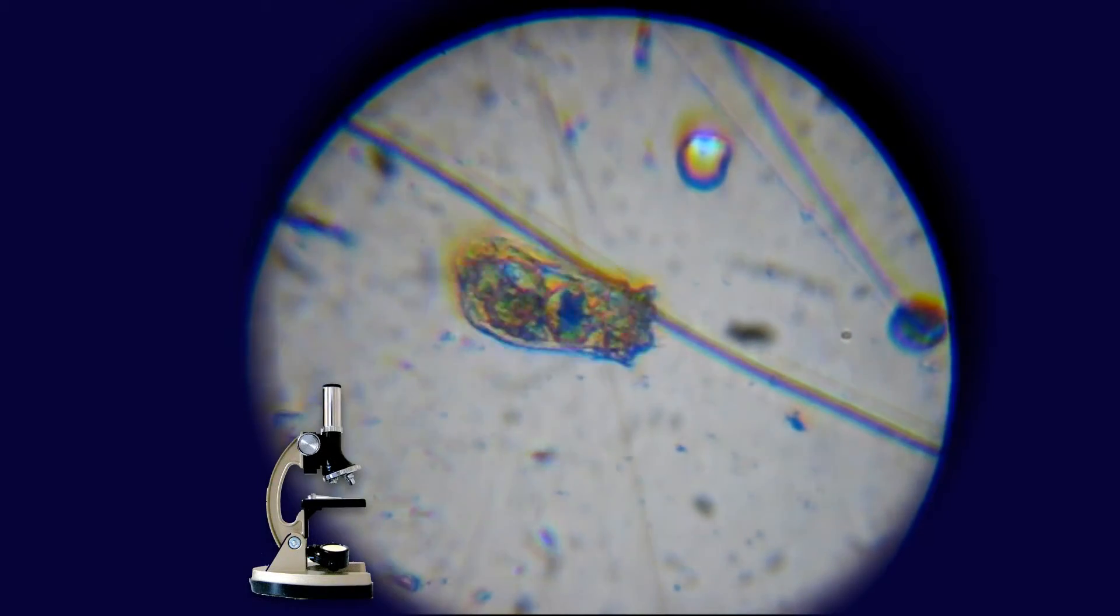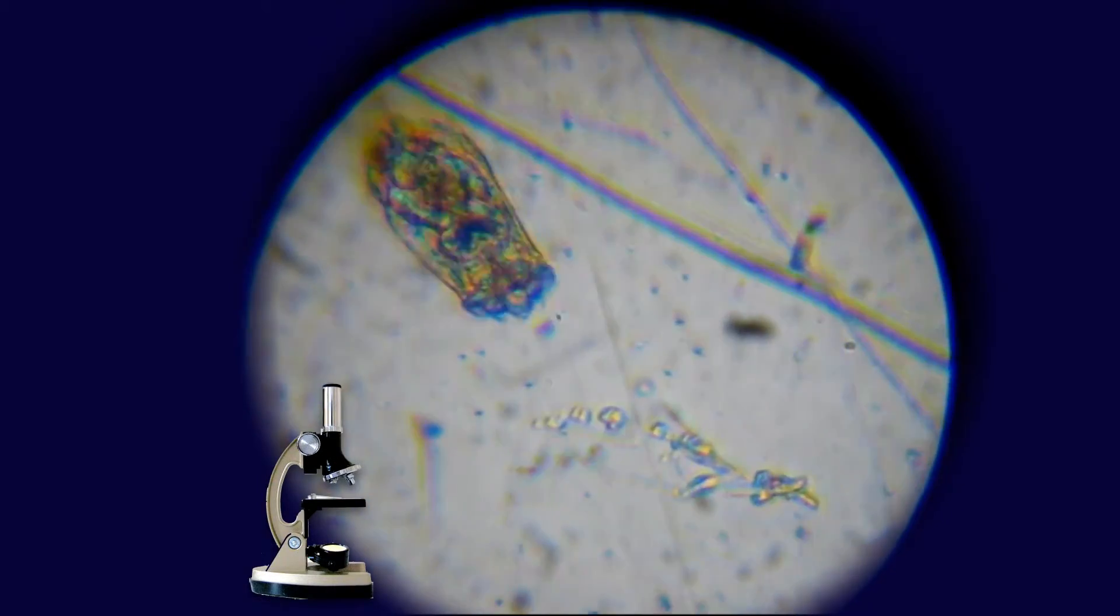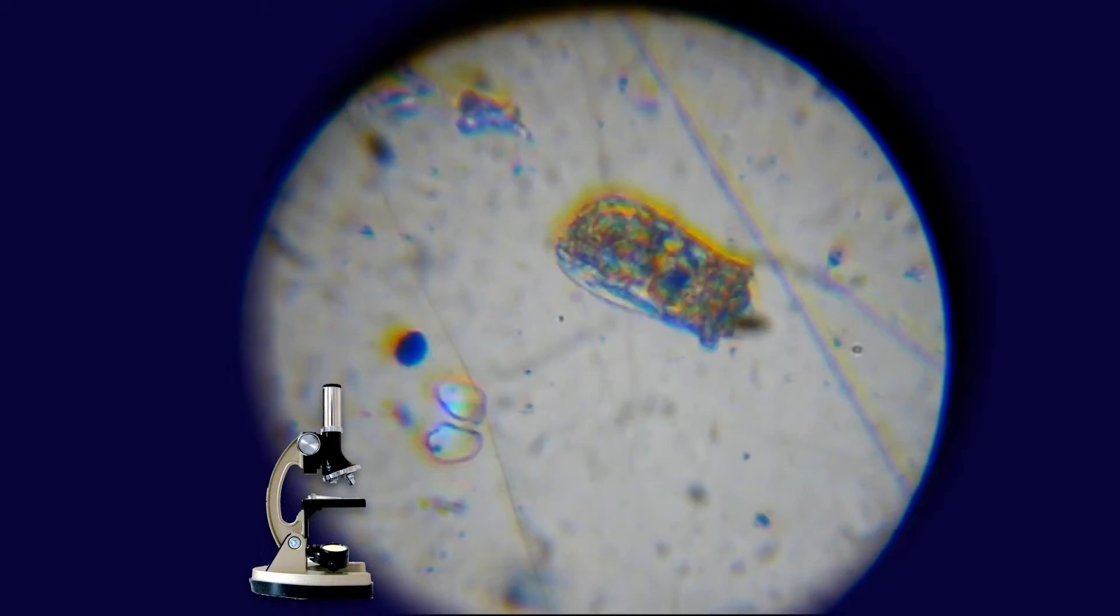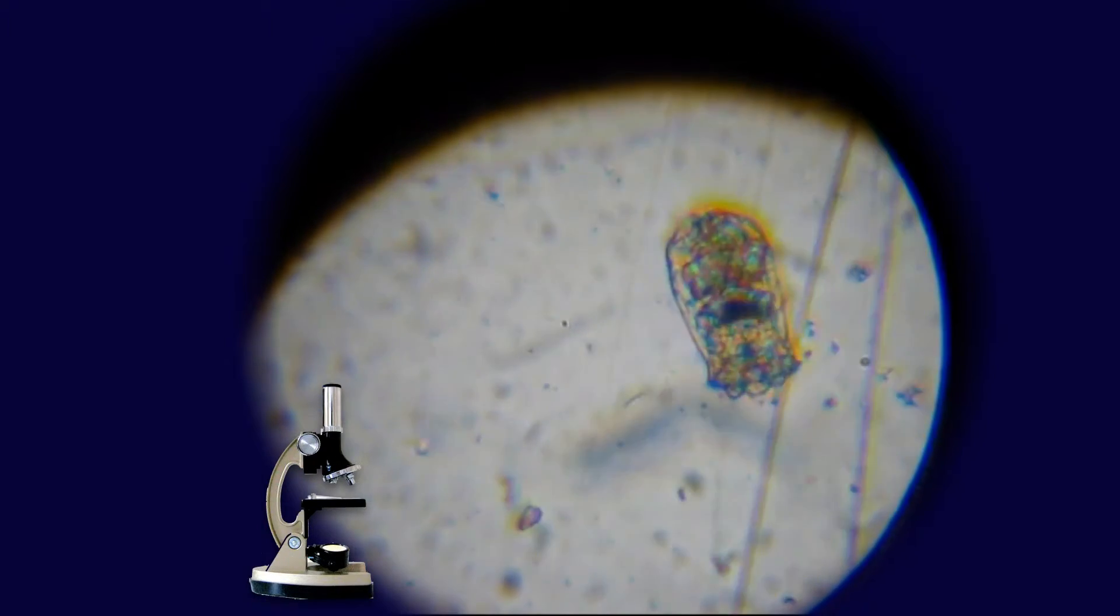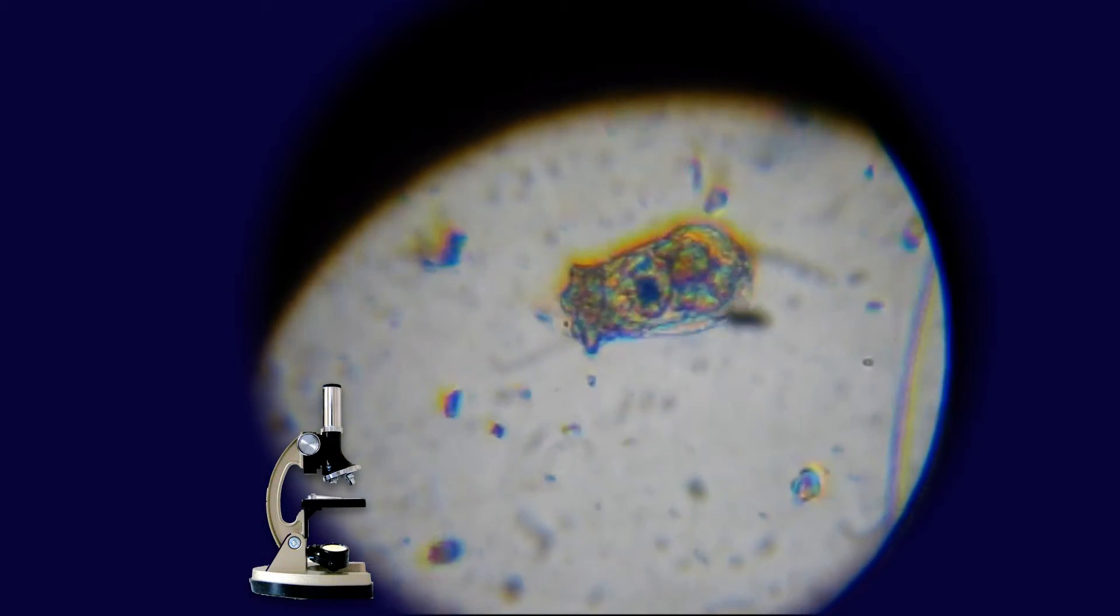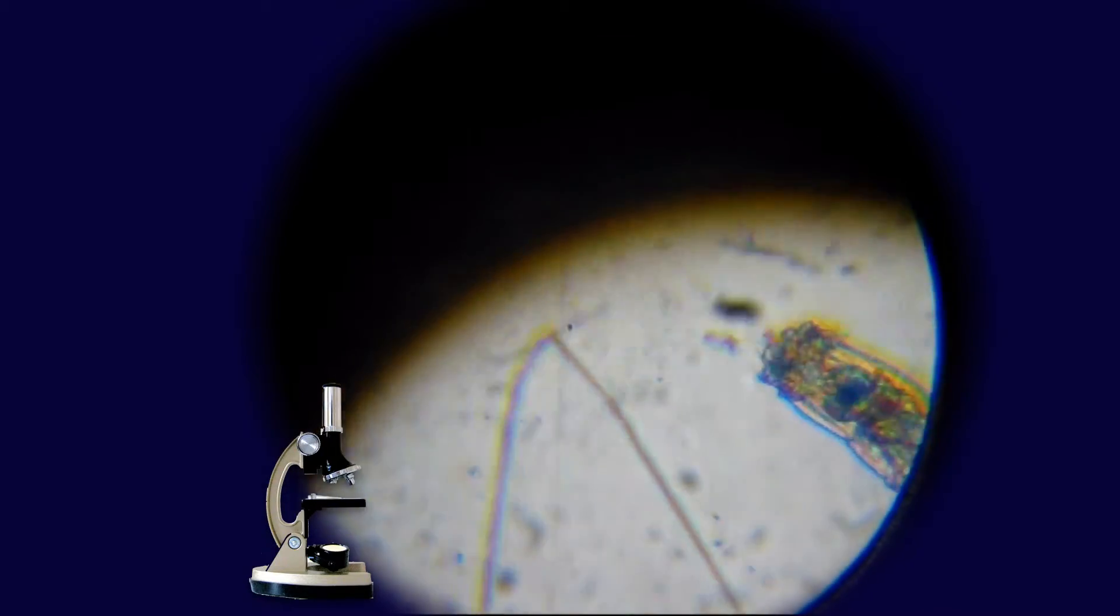So these animals are called wheel animals, or rotifers to use their slightly posher name. And they're called that because their front end, it looks as if they've got a wheel spinning round. Now actually that's got tiny little hair-like things called cilia which spin round and let the animal move through the water. So I guess they're not technically wheels, but they do look a bit like it, don't they?